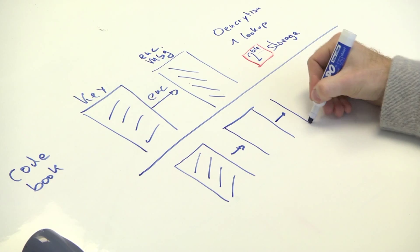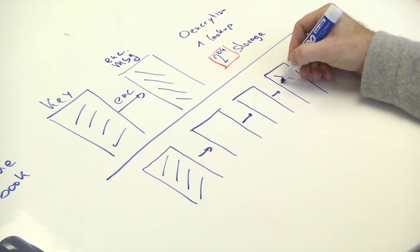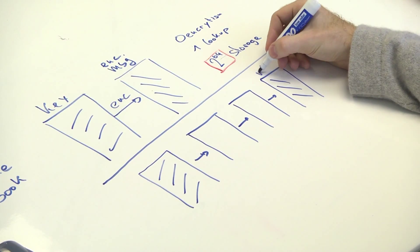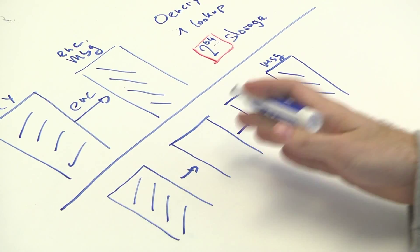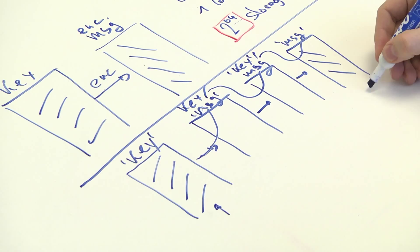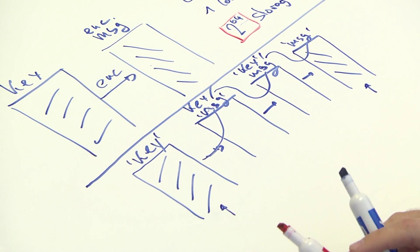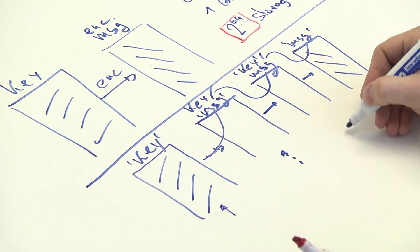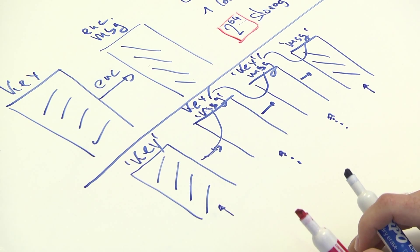We again start with a table of many keys, and for each of them again apply the encryption function — but not just once, but several times. Of the resulting data set, which of course will be of the same number of samples and again won't have the same coverage, we throw away most everything — the things in the middle — and only keep the first and the last column.